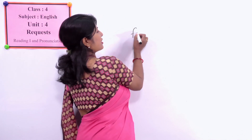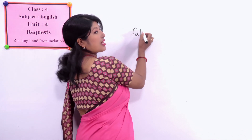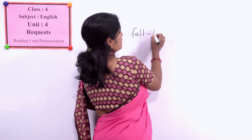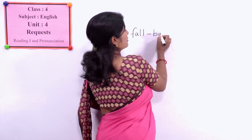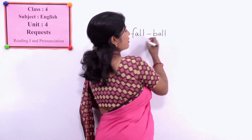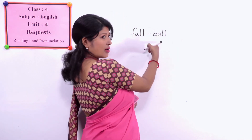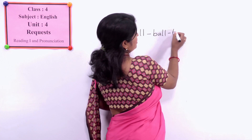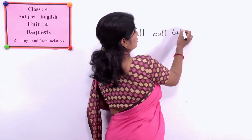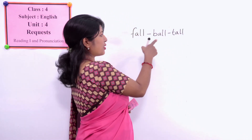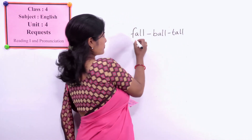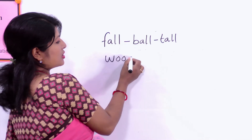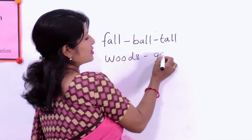For example: F-A-L-L — fall, ball, or it rhymes with tall. Fall, ball, tall — the ending sounds are similar.